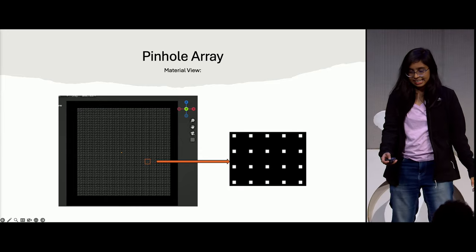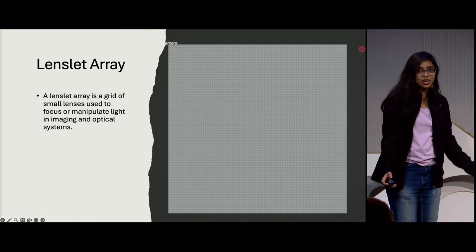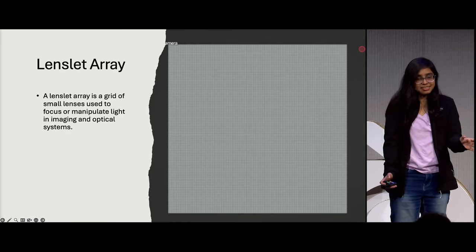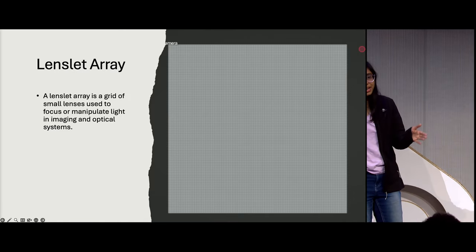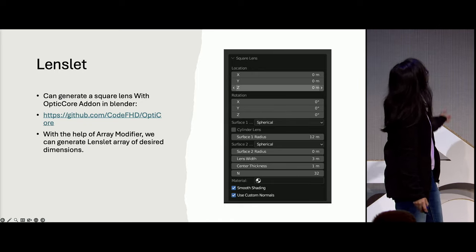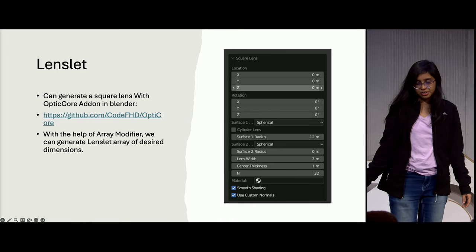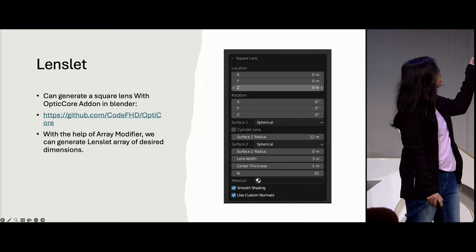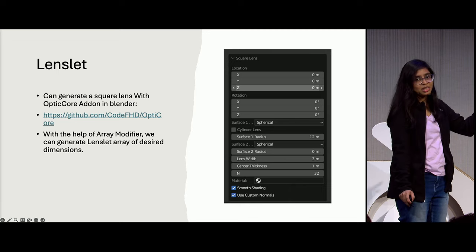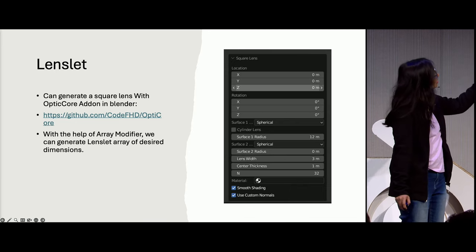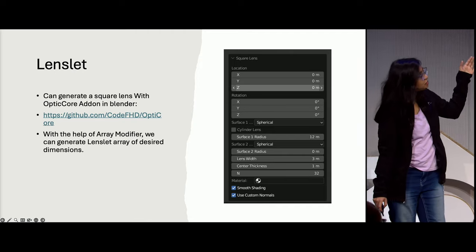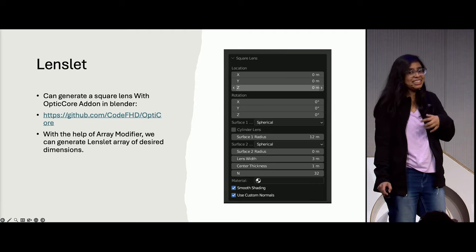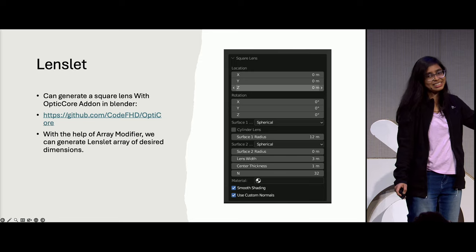Next is the lenslet array. It's a closely packed arrangement of micro lenses. We use the OptiCore add-on for that — square lenses are easily modeled. We can adjust the curvature of the lens, thickness, lens width, focal length — all the parameters. All these parameters need to be adjusted in each iteration, and with Blender it's very easy.